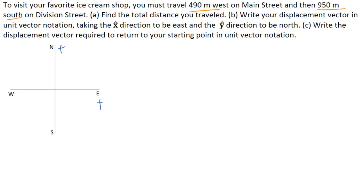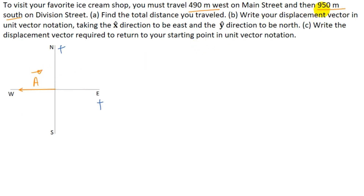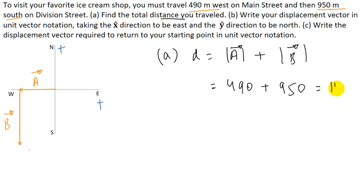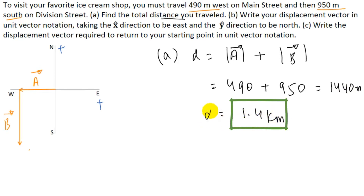490 meters due West gives vector A in the westward direction. Then you move 950 meters due South, giving vector B. In part (a), we need to find the total distance traveled. Total distance D equals the magnitude of vector A plus the magnitude of vector B: 490 meters plus 950 meters equals 1440 meters, or 1.4 kilometers. This is the answer for part (a).